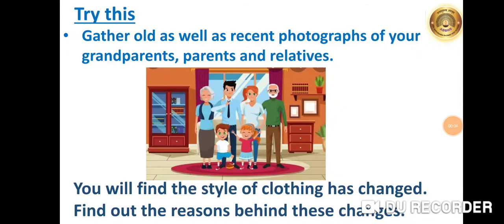Gather old as well as recent photographs of your grandparents, parents, and relatives. Look at this image — we can see three generations here: the grandfather, your father, and you. You might see a change in the type of clothes that your grandfather wears, your father wears, and what you wear. As generations pass and time passes, we all adapt to different types of choices. People who are older are more comfortable being simple, while younger ones prefer to be more modernized, to dress well and wear fancy clothes.